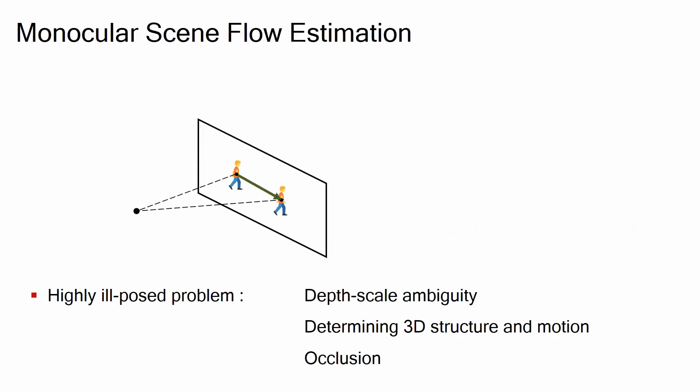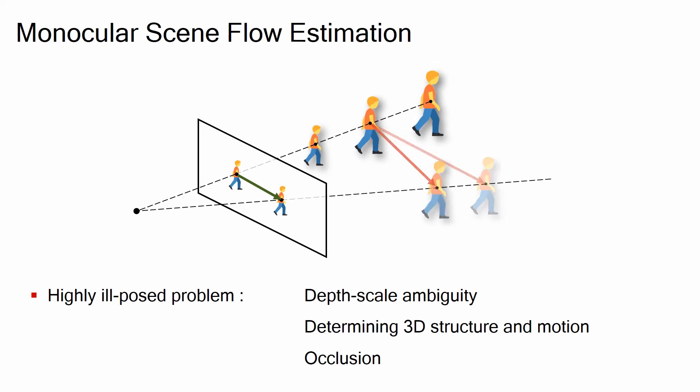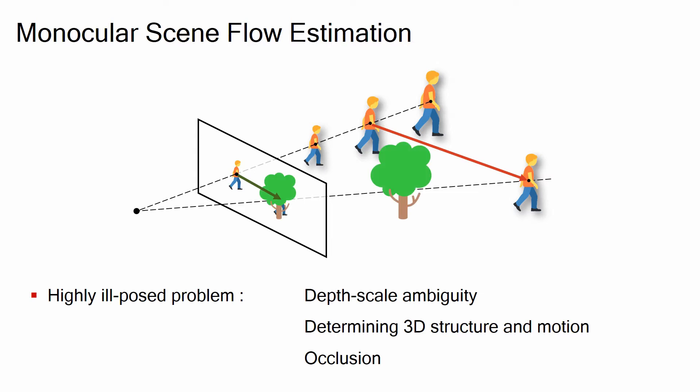This monocular scene flow problem, however, is highly ill-posed. It is challenging to determine the correct scale and depth as well as 3D motion jointly. Also, occlusion makes the problem much harder.